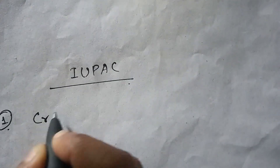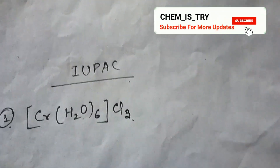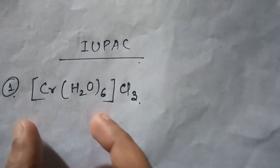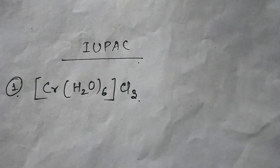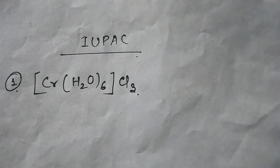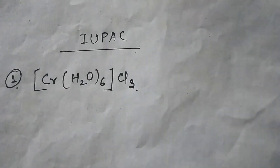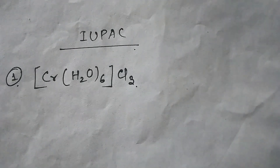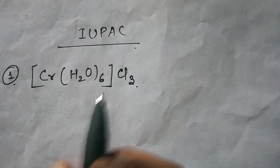Let's take the first example: [Cr(H₂O)₆]Cl₃. In this compound you can see the first part is the coordination sphere part and the second part is the counter ion part. I hope all of you have seen my previous two videos where I discussed how to find the oxidation state of the metal and the rules to find the IUPAC name of coordination compounds. If you have not seen them, the link is in the description box below.